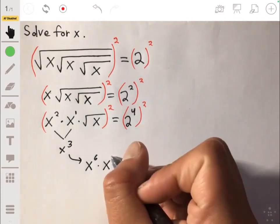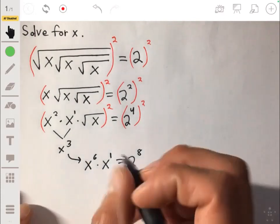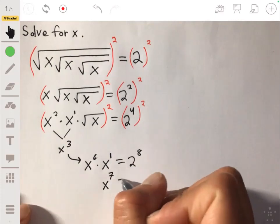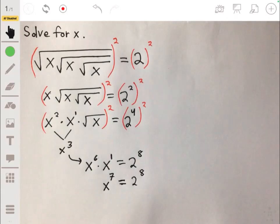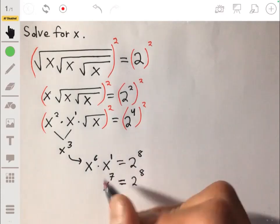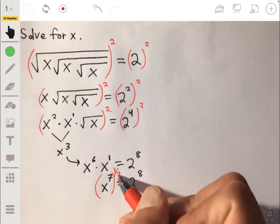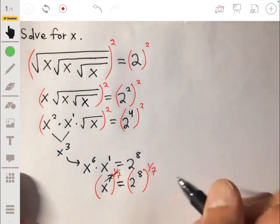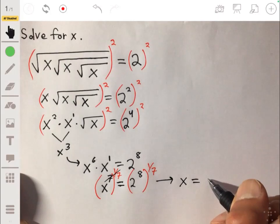And then we just simplify this. Let's combine these x's by adding their exponents, so we get x to the seventh equals 2 to the eighth. Then we just raise each side to the one-seventh power, and then we get that x is equal to 2 to the eighth-sevenths, and that's our answer.